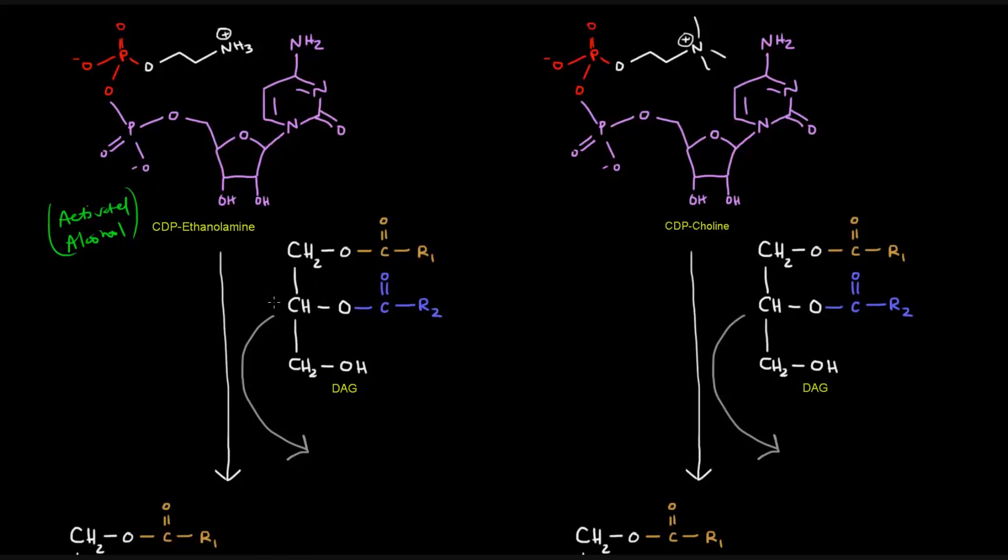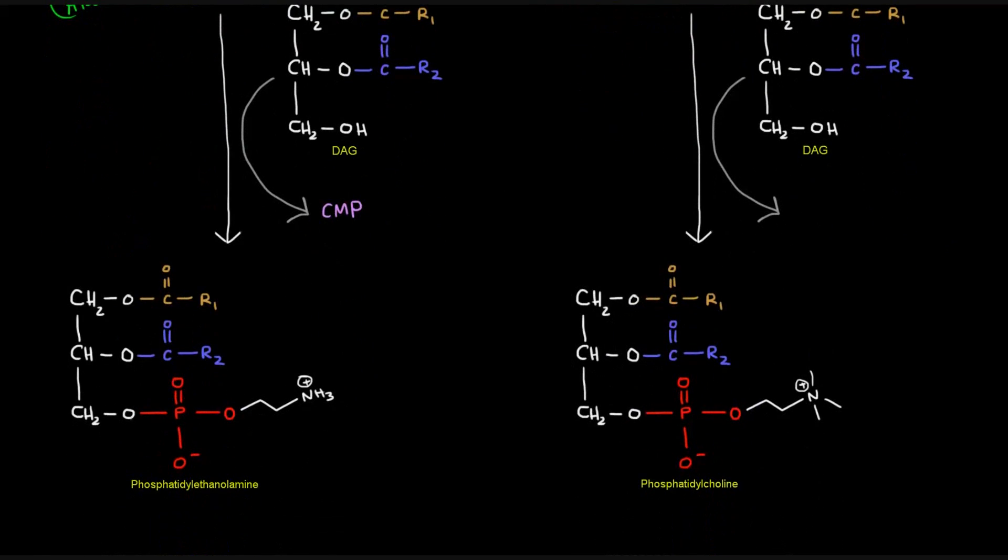Diacylglycerol comes in, and it's going to basically kick off the CDP, or excuse me, the CMP portion, the purple portion here. That's going to fall off, and the diacylglycerol is basically going to take its place. Specifically, the OH, or the oxygen on the third carbon in DAG, is going to connect to the phosphate group to give us that head group, and that will give us phosphatidylethanolamine.